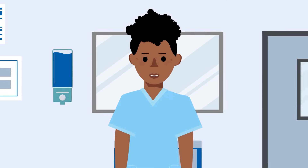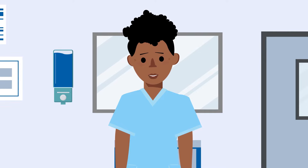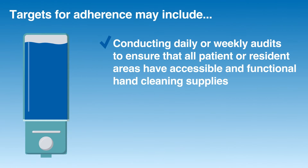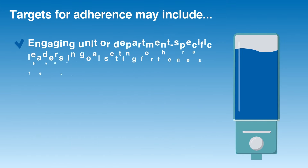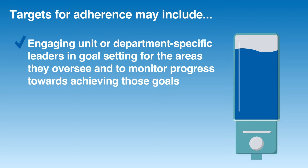For example, targets for adherence to hand cleaning may include conducting daily or weekly audits to ensure that all patient or resident areas have accessible and functional hand cleaning supplies, creating a way for personnel to report barriers to hand cleaning and encouraging them to communicate when help is needed, and engaging unit or department specific leaders in goal setting for the areas they oversee and to monitor progress towards achieving those goals.